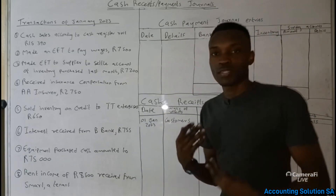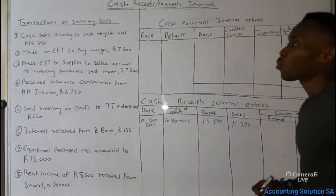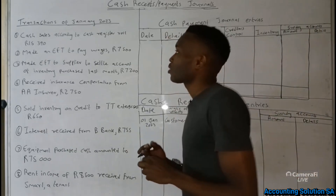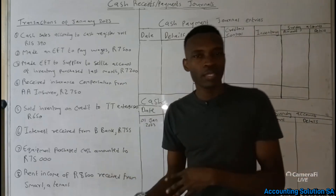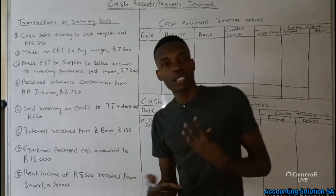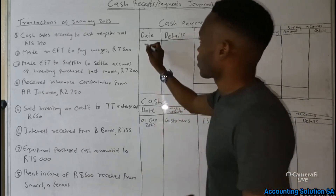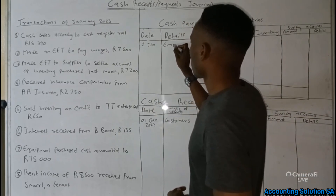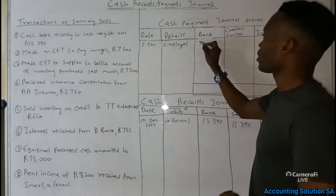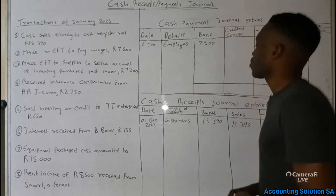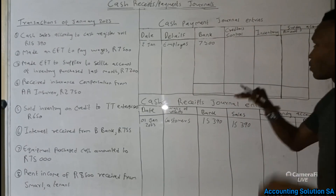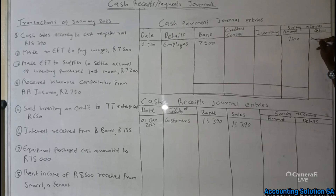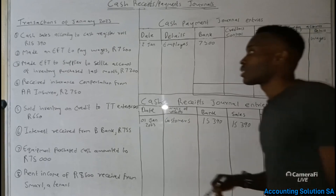Transaction number two: an EFT or electronic fund transfer to pay wages of 7,500. Companies pay their employees wages of 7,500, which means this is going to be cash payment general. Date is 2 January. Under details we write 'employees,' and the amount is 7,500. It is not creditors control or inventory, so we go to the sundry account and record 7,500 and indicate it is for wages.